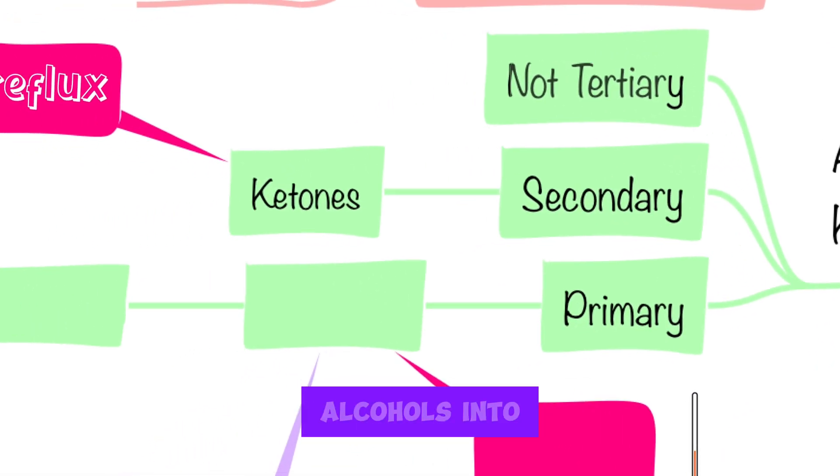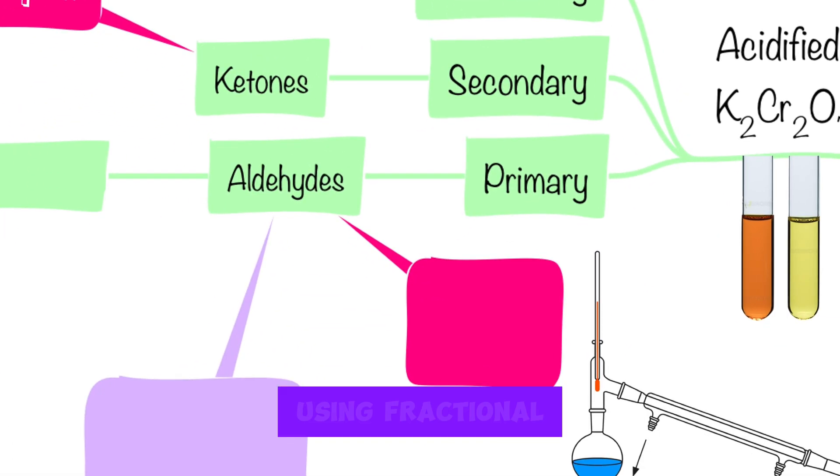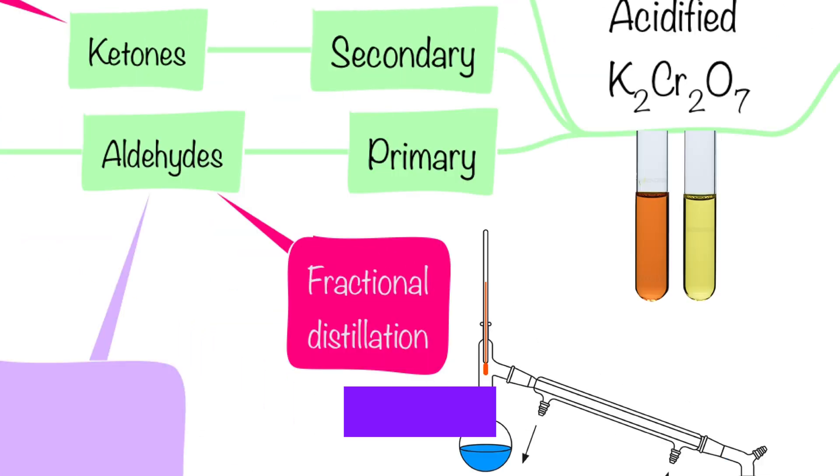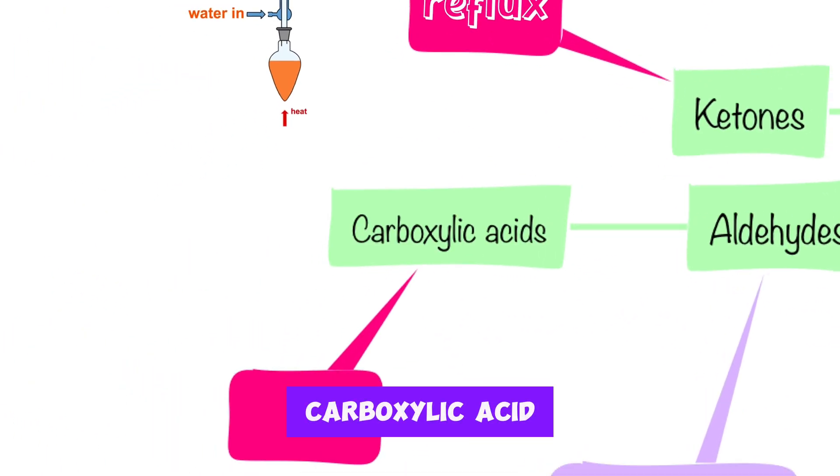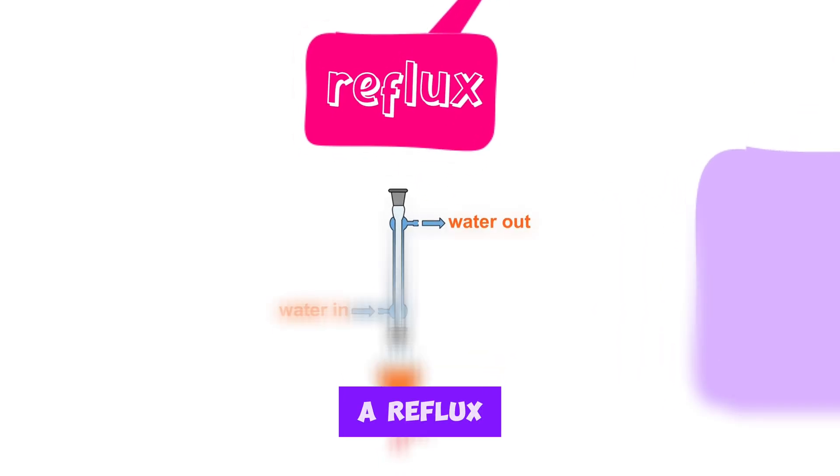You can oxidize primary alcohols into aldehydes using fractional distillation. You can also oxidize primary alcohols into carboxylic acid if you heat in a reflux condenser.